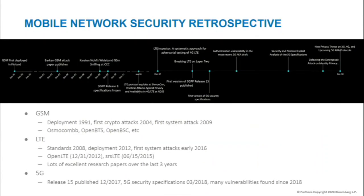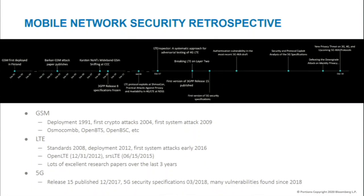Just a little bit of a timeline: GSM was deployed in 1991, and there were crypto attacks against the algorithms in 2004, but Karsten didn't demonstrate how to break it system-wide until 2009. The main reason behind that was a bunch of open source tools that appeared throughout the years — Osmocom BB, OpenBTS, and the like.